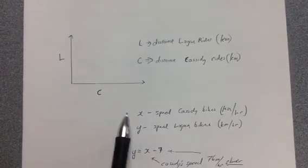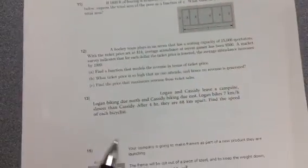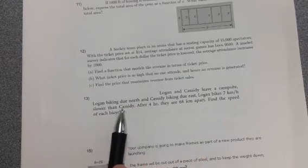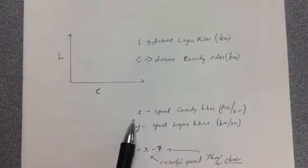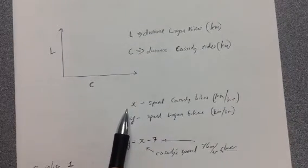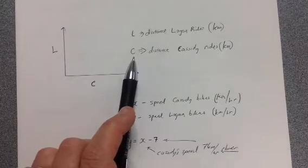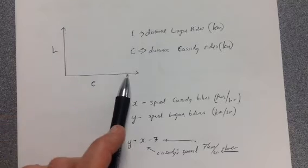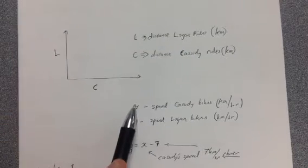But then I look at the question in the paragraph and it says something about their speeds. So 7 kilometers per hour slower than Cassidy. So somehow we have to work in speed as variables as well. So I think that the speed is going to affect the distance. And we are trying to figure out how far apart they are. Anyway, these are just some ideas.